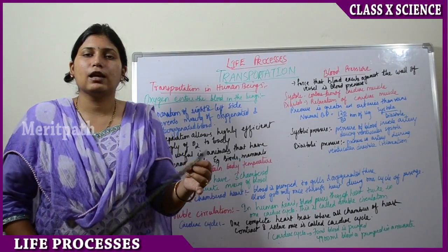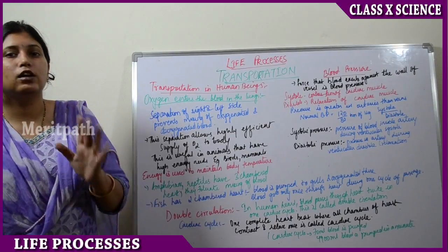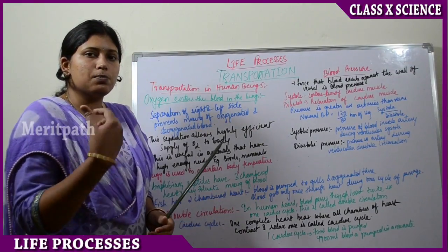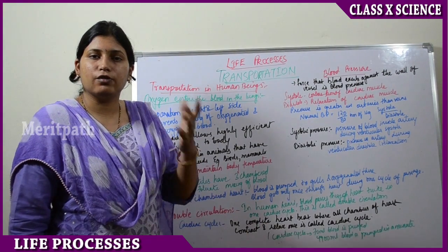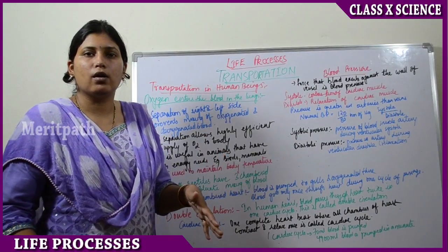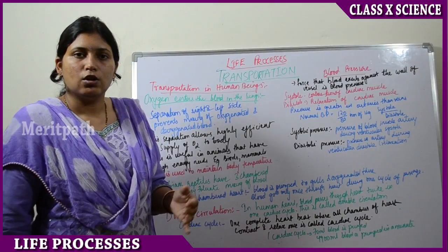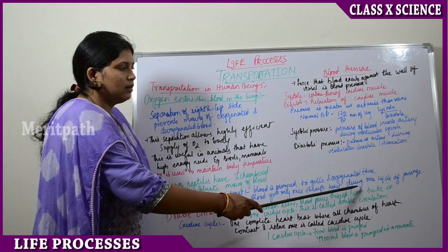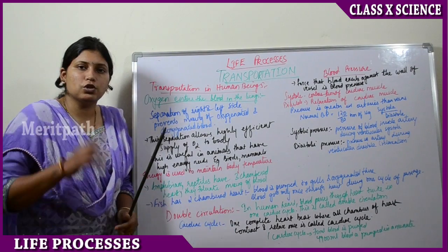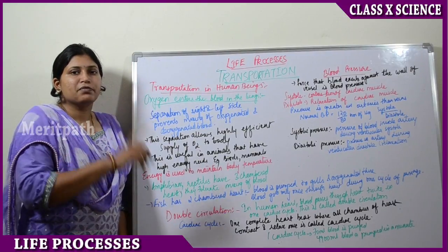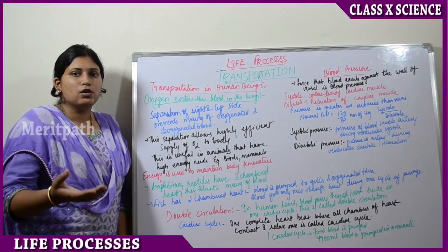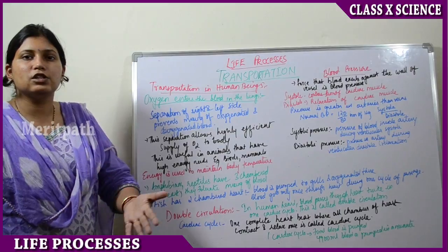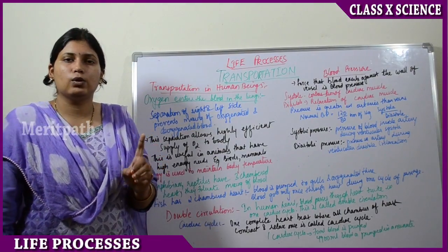In water, oxygen is present in a dissolved form. Fish has a two-chambered heart and blood is pumped to the gills, where oxygenation occurs. The blood is not pumped to any other organs, as fish do not have many specialized organs. Blood goes only once through the heart in one cycle of passage, so there is only one cardiac cycle in fish.